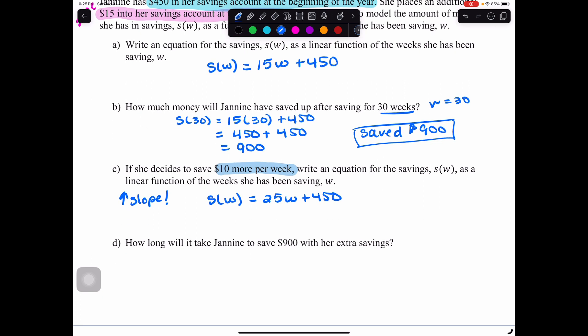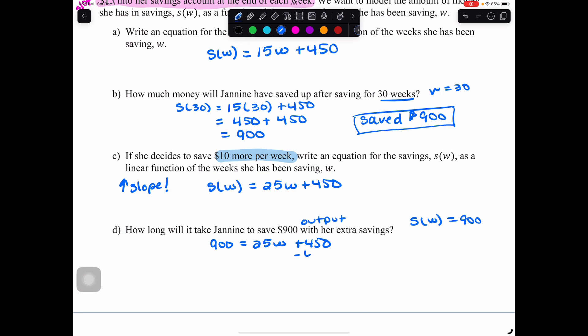Part d: how long will it take Janine to save $900 with her extra savings? This time, we know she's going to save $900. This is our output, so that means s of w equals 900. We're going to replace the left-hand side of our equation with 900. On the other side, we have 25w plus 450. We're going to solve for our input to see how many weeks it will take her. Subtract 450 from both sides, so 450 equals 25w, then divide by 25 to see that w is 18. It will take her 18 weeks.